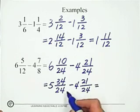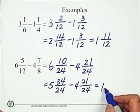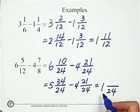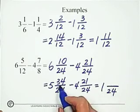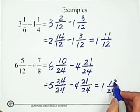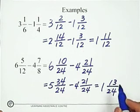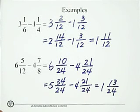Then subtract the whole number portion. And subtract the fraction portion. It is 13. And there is no common factor. So the answer is 1 and 13 over 24.